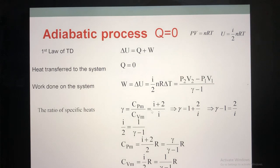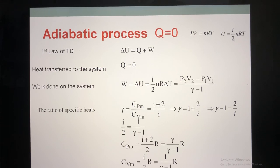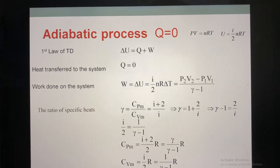For the first law of thermodynamics, we focus on three quantities. The first one is the change of internal energy, the second one is the heat, and the last one is the work. Here, we have the equation for ideal gas, and this formula for the internal energy — you studied these formulas from ideal gas in lecture four. So now we just apply it.